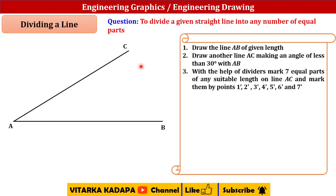Now with the help of the dividers, take a divider and mark seven equal parts of any suitable length on the line and mark them with the points 1', 2', 3', 4', up to 7'. Take a divider with some sample length, for example consider it as a 10 mm length.